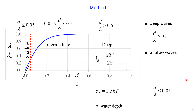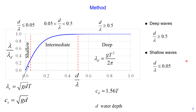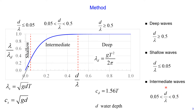We have shallow waves when this ratio is less than or equal to 0.05. In this case, we use equations where the wavelength depends on both water depth and wave period, and the wave speed only depends on the water depth. Finally, we have intermediate waves.